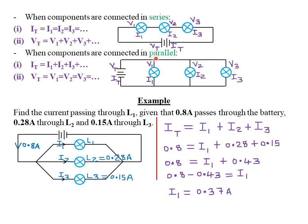When components are connected in parallel, it becomes the reverse. The total current equals the sum of the current through each component: I_total = I1 + I2 + I3. However, for voltage in a parallel circuit, the total voltage equals the voltage across each individual component: V_total = V1 = V2 = V3.